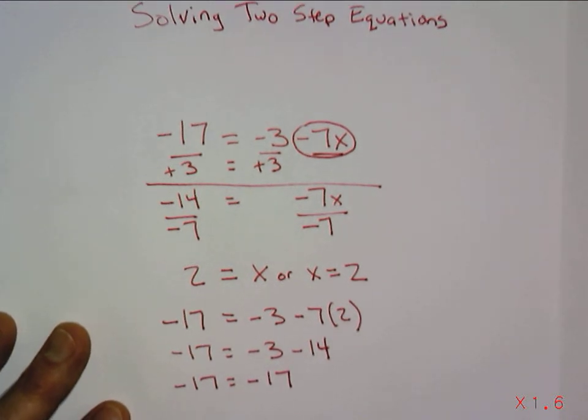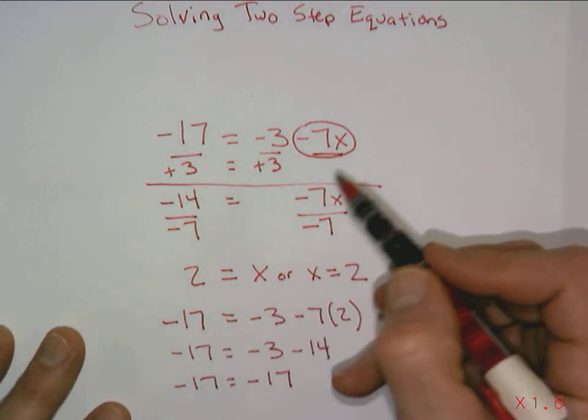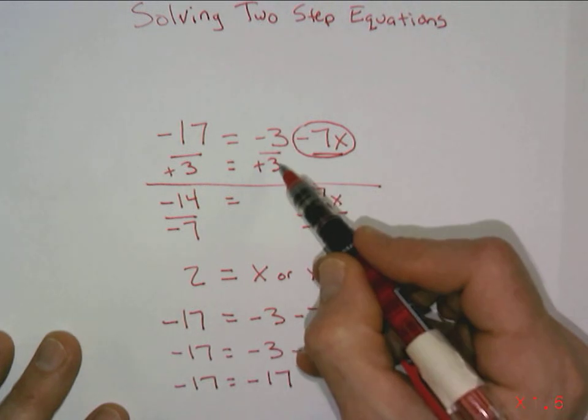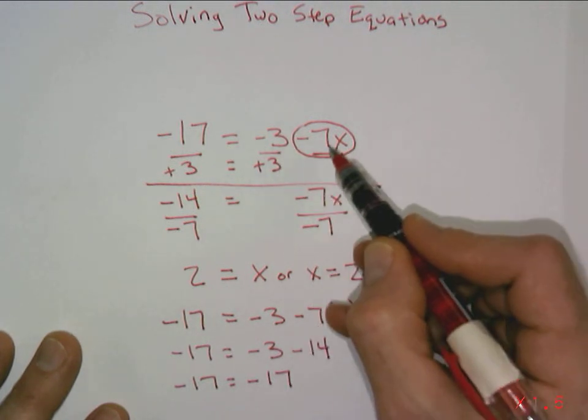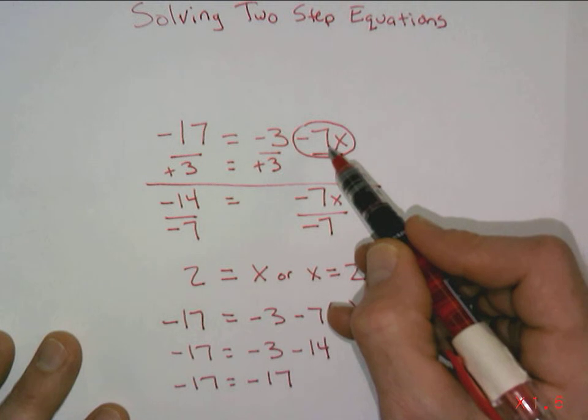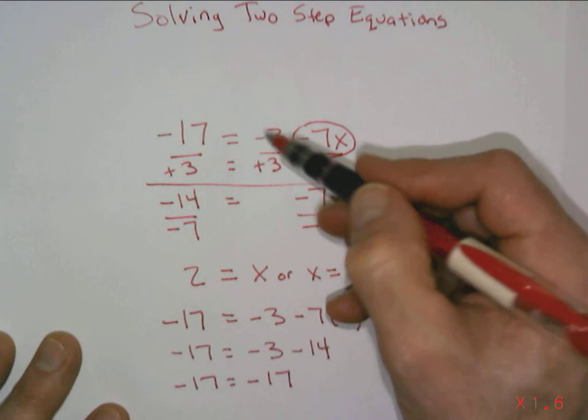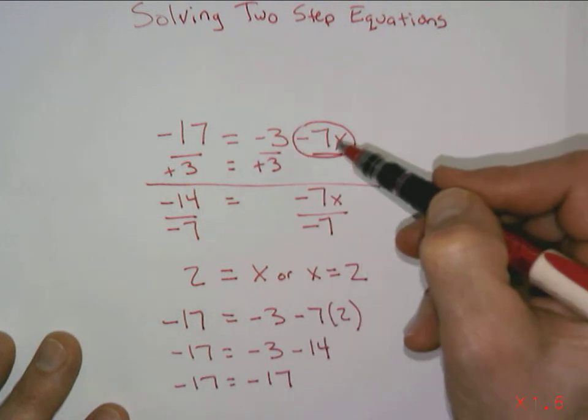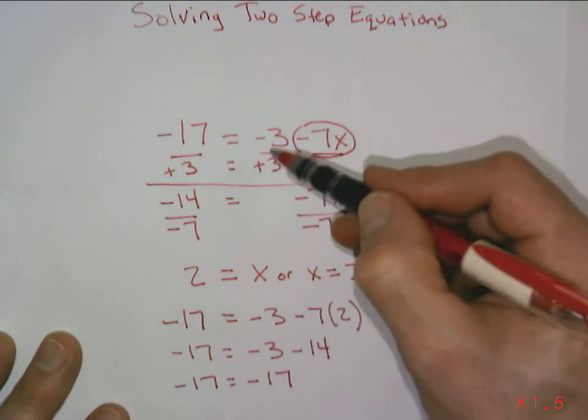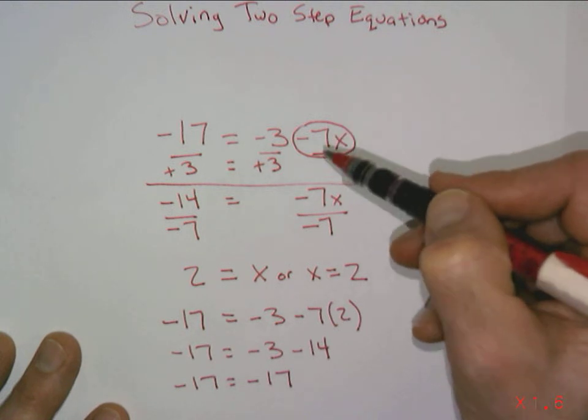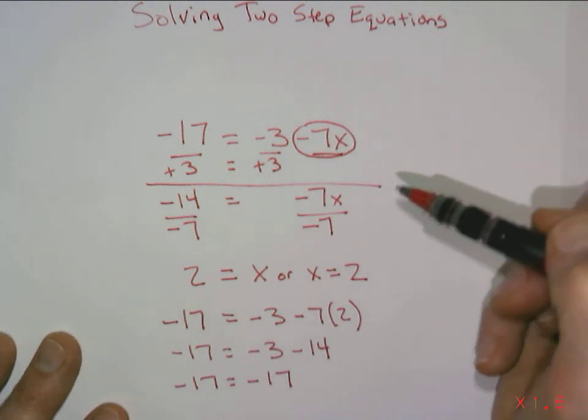So the whole key to two-step problems is to basically do the number term first, opposite of the number term, and then divide by the multiplier of x. So kind of the simple mental math way sometimes people do it is just subtract this from both sides, or add this to both sides, or add this to both sides, or add the opposite of this to both sides, and then divide by whatever this term is. And that's how you solve two-step equations.